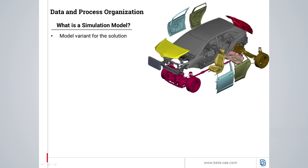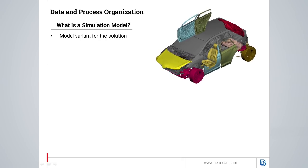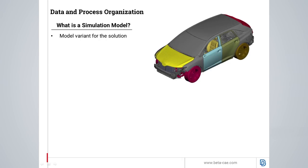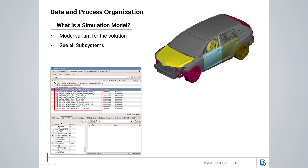The next level of the model data structure is the simulation model. This, essentially, is the model variant to be solved. In the model browser, there's a dedicated tab for the simulation models, where the user can view all the subsystems, the combination of which form the model variant.